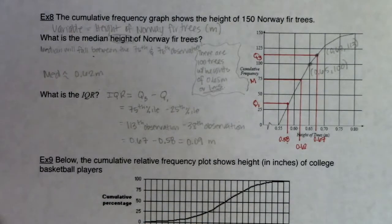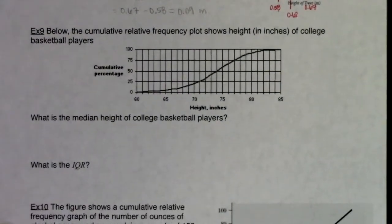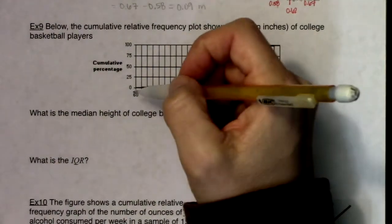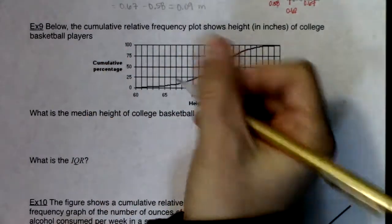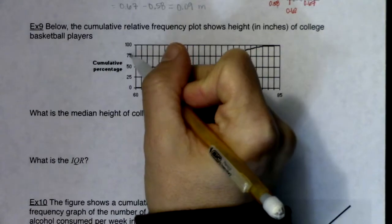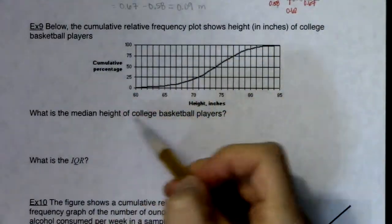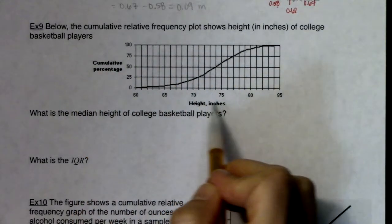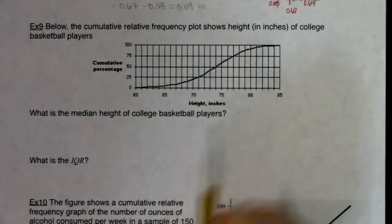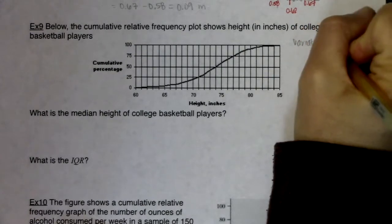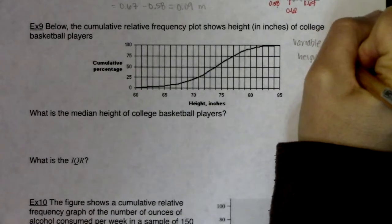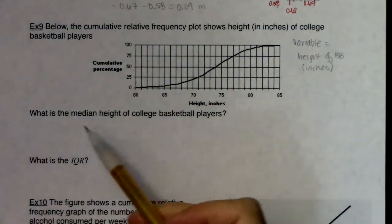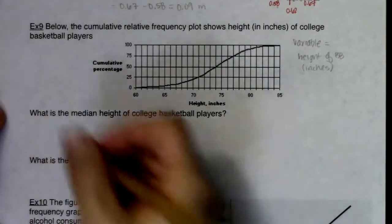The only difference between example 8 and example 9 is that example 9 is given in cumulative relative frequency — cumulative percentages along the y-axis. Zero percent, 25 percent, 50 percent, 75 percent, and 100 percent. The cumulative relative frequency plot shows the height in inches of college basketball players. The variable is height — a continuous numerical variable — measured in inches.